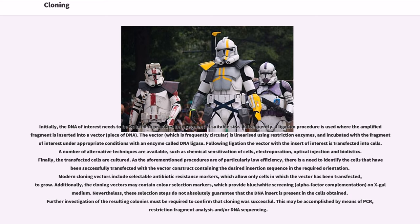The vector, which is frequently circular, is linearized using restriction enzymes and incubated with the fragment of interest under appropriate conditions with an enzyme called DNA ligase. Following ligation, the vector with the insert of interest is transfected into cells. A number of alternative techniques are available, such as chemical sensitization of cells, electroporation, optical injection, and biolistics. Finally, the transfected cells are cultured. Modern cloning vectors include selectable antibiotic resistance markers, which allow only cells in which the vector has been transfected to grow.